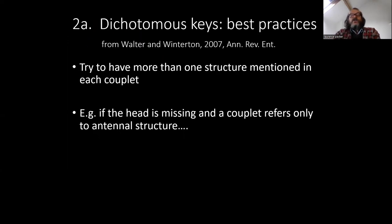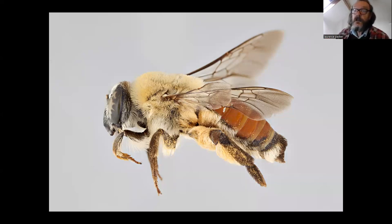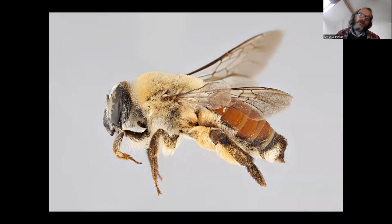So let's just look at dichotomous keys. Best practice: try to have more than one structure mentioned in each couplet. If that part's missing, you can't proceed. Here we see a bee without the antenna — if to get to its identification you needed characteristics from the antenna, it wouldn't work. It's also missing most of the hind tarsomere, so if there's a feature associated with the hind tarsal claw, you couldn't use the key either.